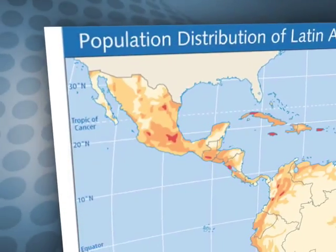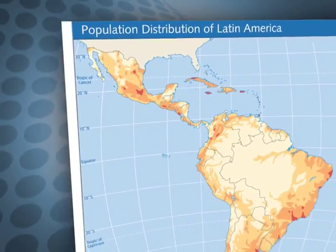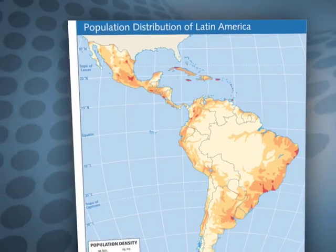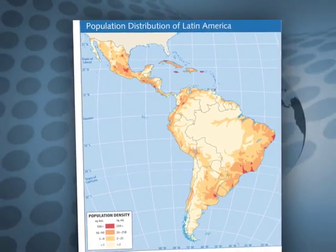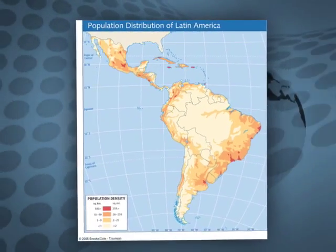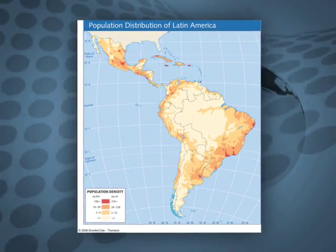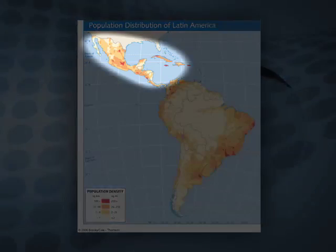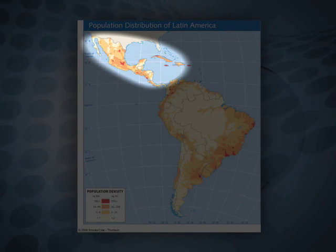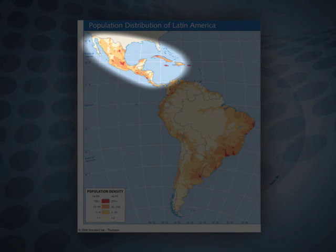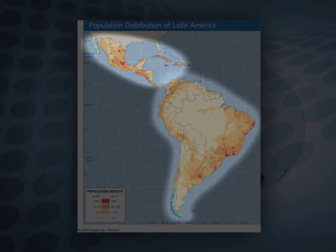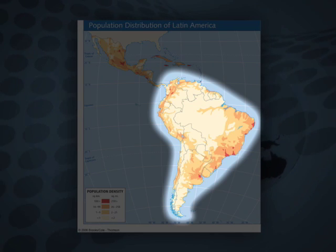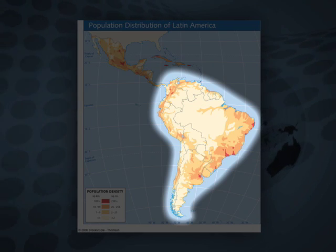Notice on this population density map of Latin America the different settlement patterns in Central and South America. In Central America, people are concentrated in the interior region, while in South America, the highest population densities are found near the coasts.